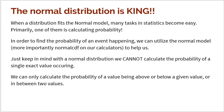When a distribution is approximately normal — because most distributions aren't necessarily perfectly normal, but they are approximately normal — many tasks in statistics become easy. Primarily, one of them is calculating probability. In order to find the probability of an event happening, we can utilize the normal model, using normal CDF on our calculators. So if we know that a distribution fits our model, and we know the mean and standard deviation, then we can easily calculate Z-scores to use normal CDF to find probabilities.